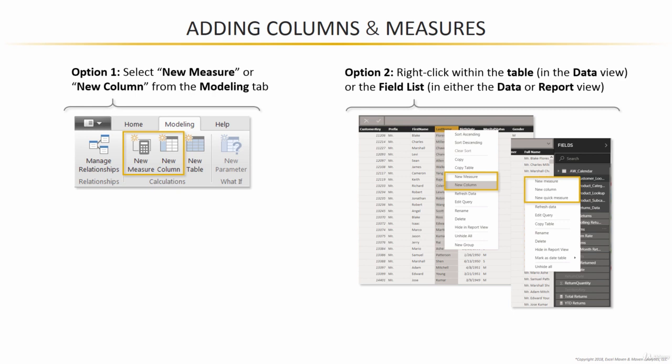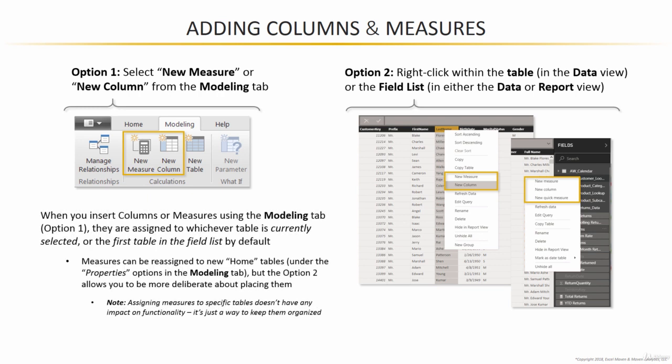There is an important difference between the two approaches. When you insert columns or measures using the modeling tab option, they'll be assigned to whichever table is currently selected, or the first table in the field list by default. When I say assigned to a table, I basically just mean this field that we're creating has to live somewhere — it has to be organized somewhere within our data model so we can determine what its home table should be.